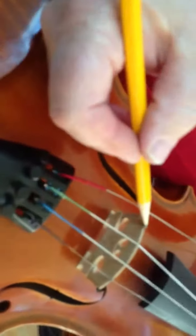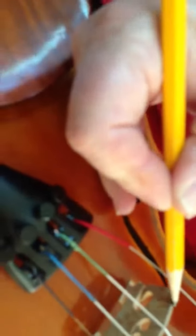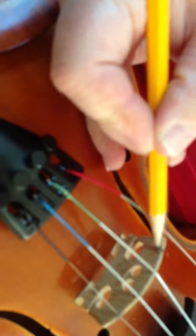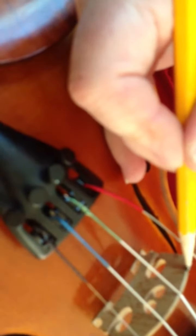See right there where it already has some lead on there? A lead pencil, this is about the only way we can get lead. What this does, it just helps the string glide over the bridge. Okay, you take that.